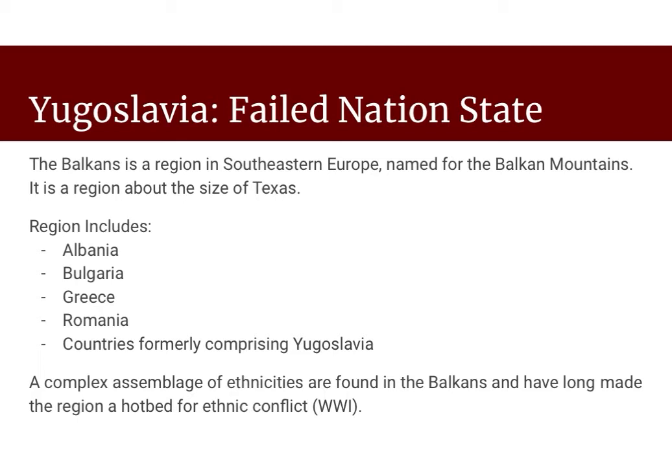Yugoslavia. You got a little bit of an intro to Yugoslavia when we watched the Once Brothers movie — a really good introduction to the issues that formed Yugoslavia and what kind of did it in. Yugoslavia is one of those countries and stories that you really need to know, because just like North and South Korea, it's a really good example of many different elements that come into play when we talk in terms of human geography. Yugoslavia is located in the Balkans — a region in southeastern Europe named for the Balkan mountains.